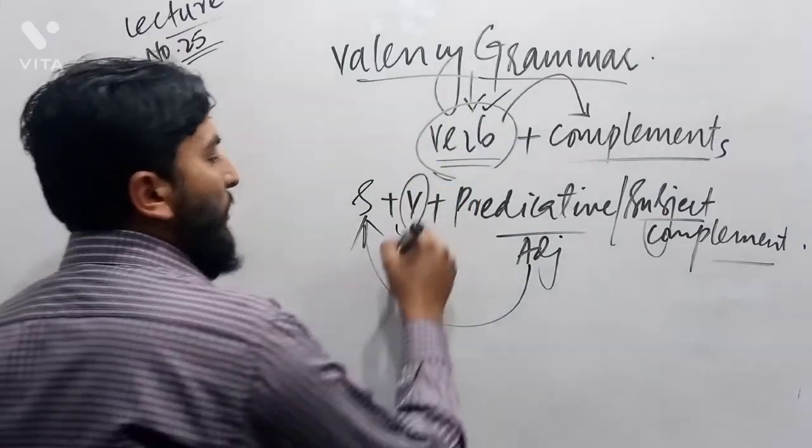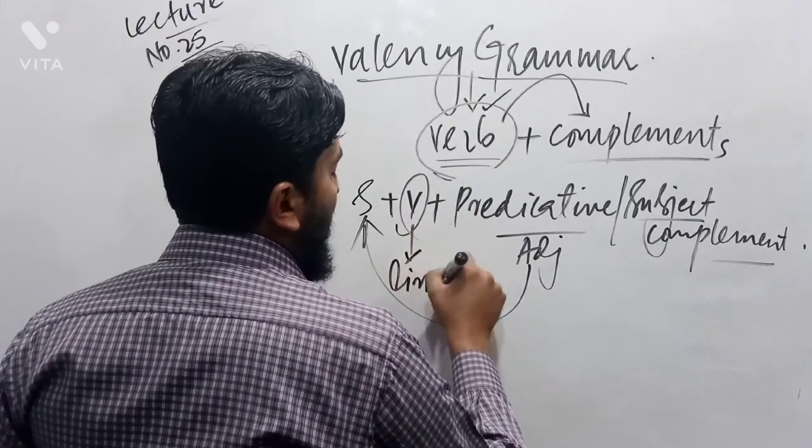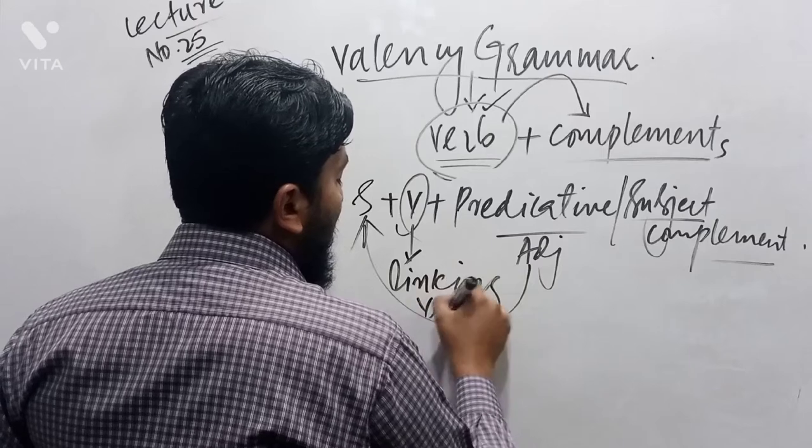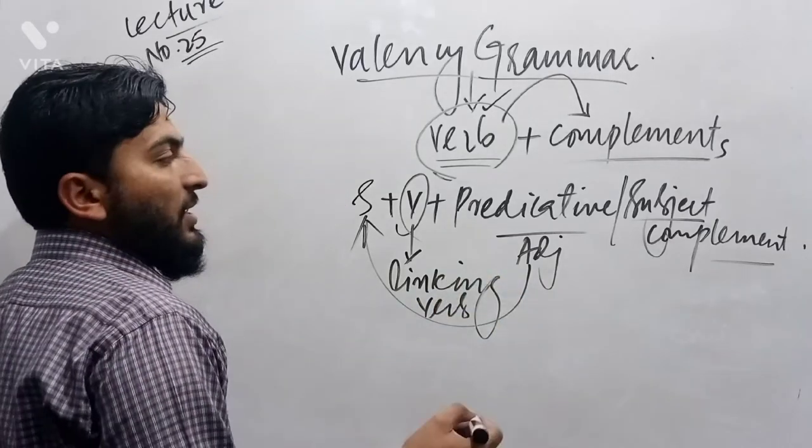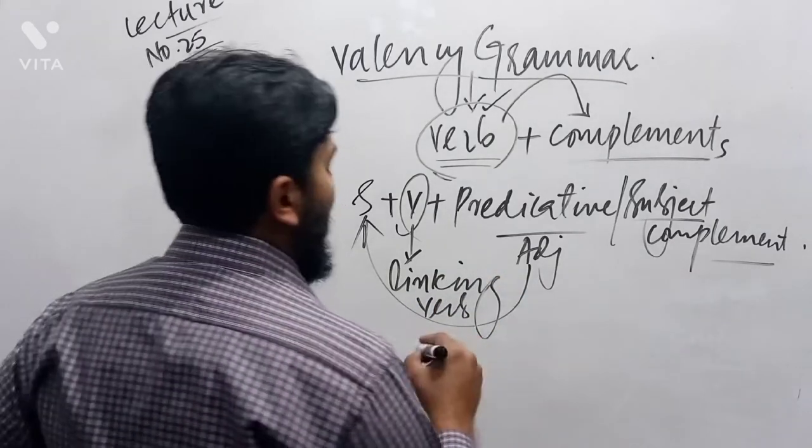Now the role of a verb. What kind of verb should I use? A linking verb. Understanding this very concept of structure. This is called Valency grammar.